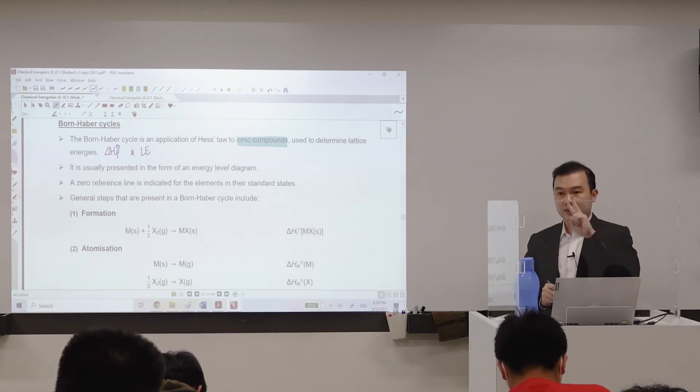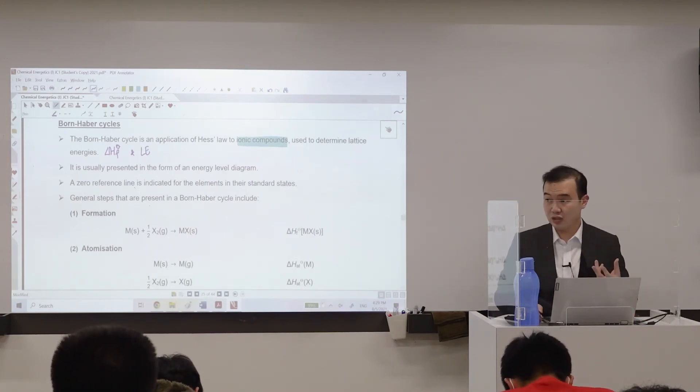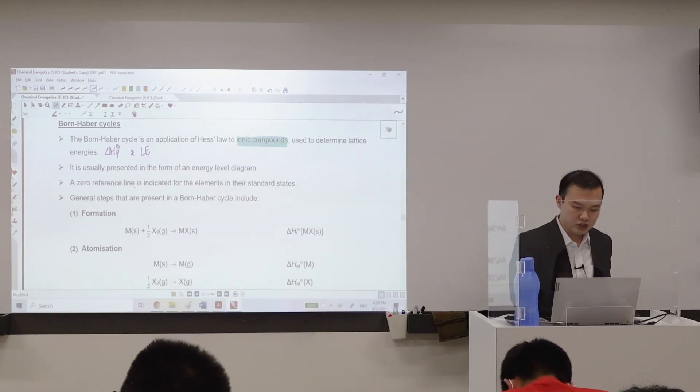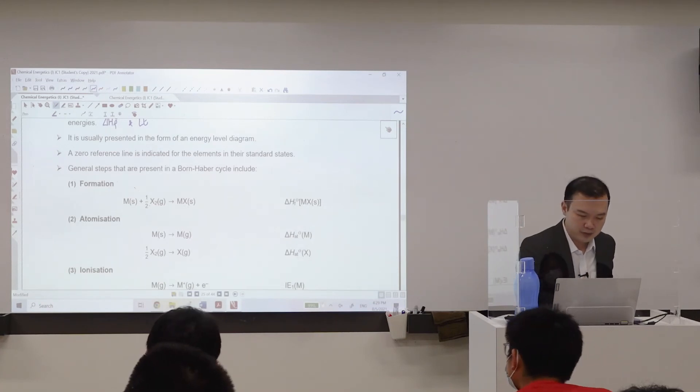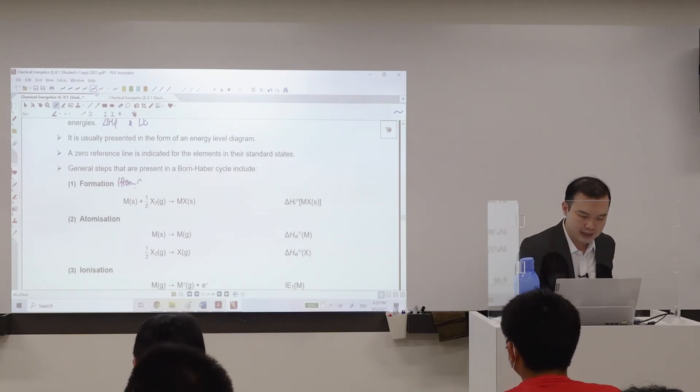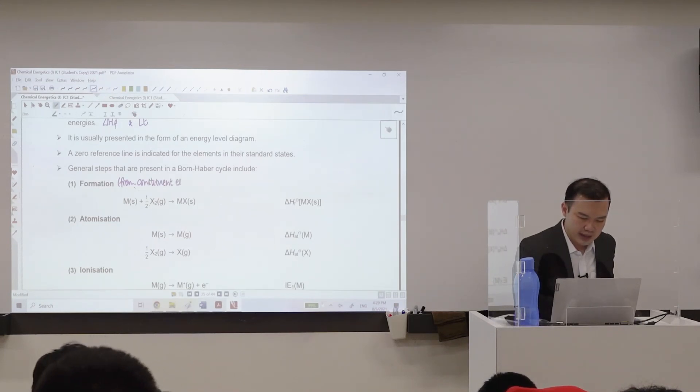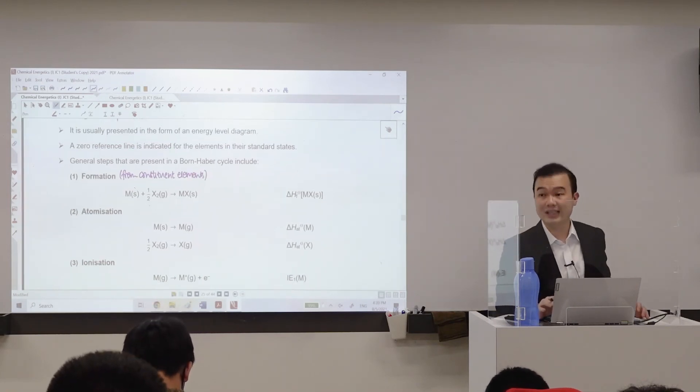In fact, these two, they are very similar. How are they similar? It's because both of them, we are trying to form the ionic solid. But the place that you start off from is different. For formation, where's our starting point? You see that when you form the ionic solid, you are forming from your constituent elements. We have discussed this last week. Formation and lattice energy have the same idea that they are forming stuff, but your starting point is different.